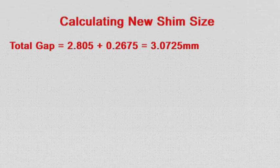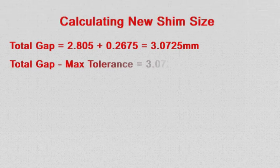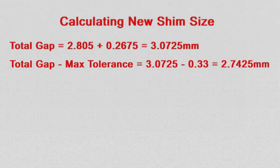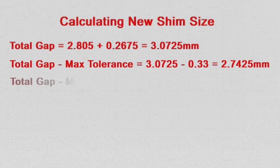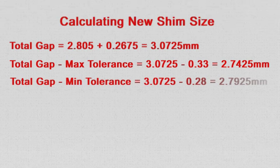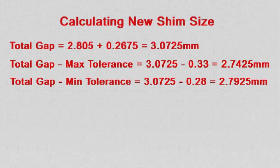The maximum gap size is 0.33 mm so the hypothetical shim size to achieve this gap would be 2.7425 mm. The minimum gap size is 0.28 mm and the hypothetical shim size to achieve that gap would be 2.7925 mm.